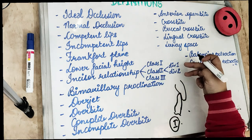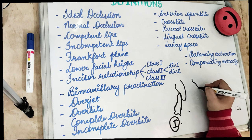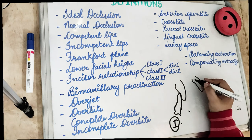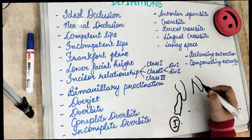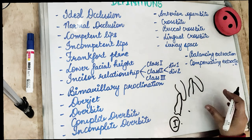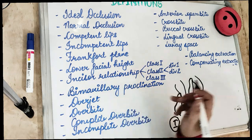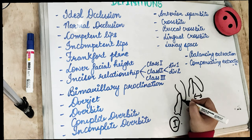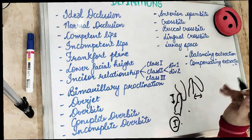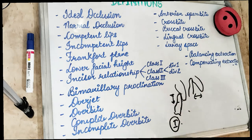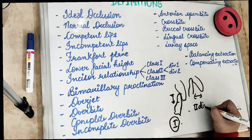Class 2 has two divisions. Class 2 Division 1 is when the upper central incisors are upright or proclined and the overjet is increased. Overjet is the horizontal relationship between teeth, while overbite is the vertical overlap. You can memorize this: 'bite' is vertical, and 'jet' — as a jet flies horizontally — is horizontal.